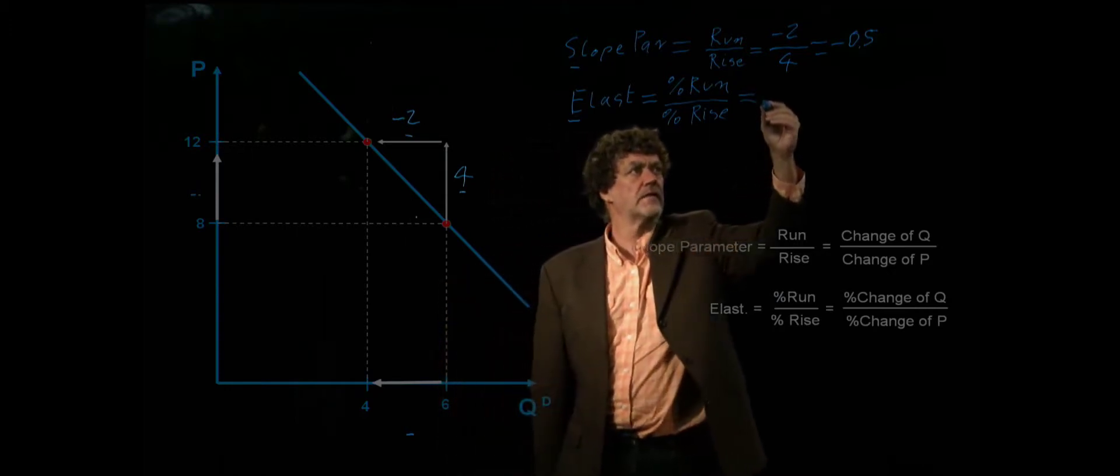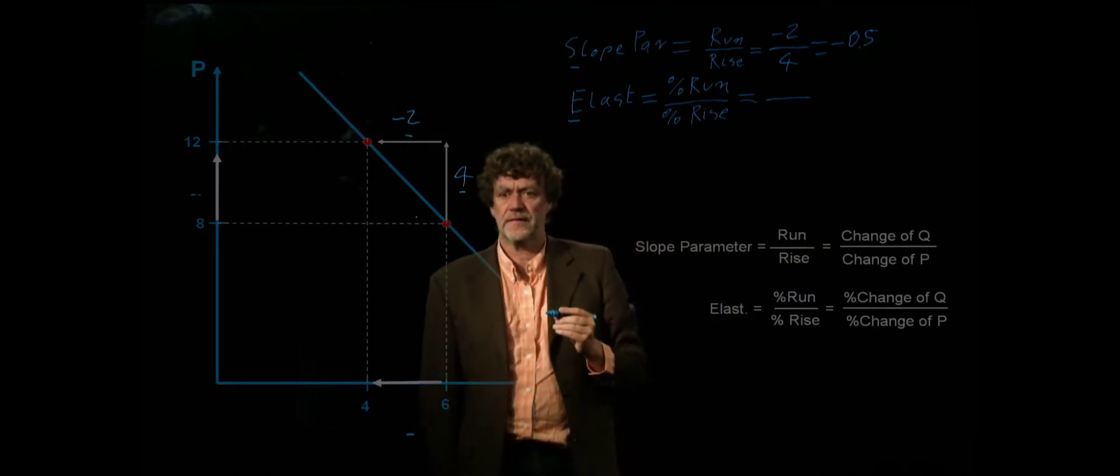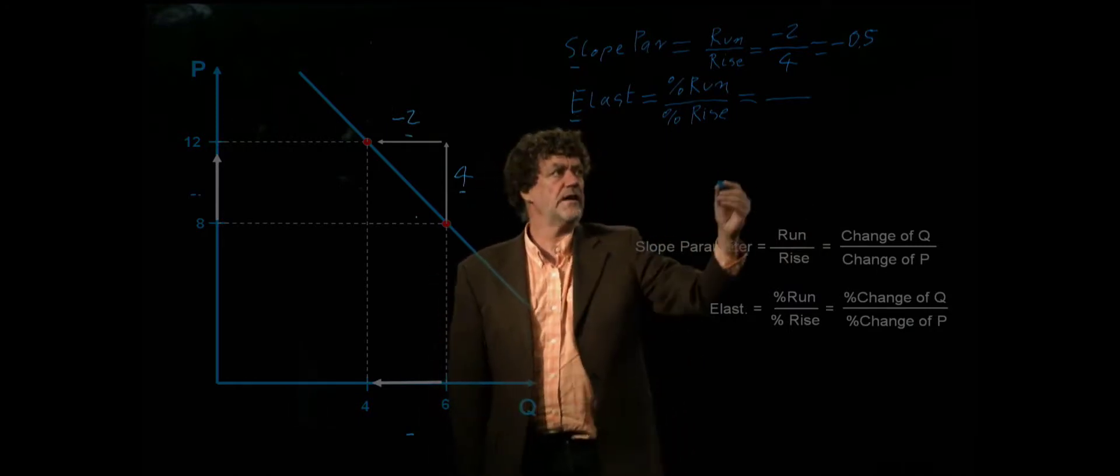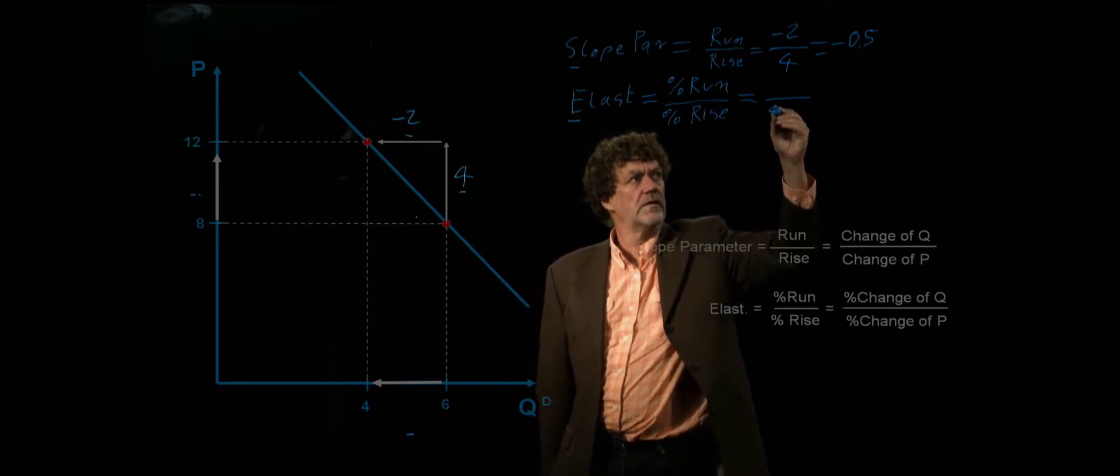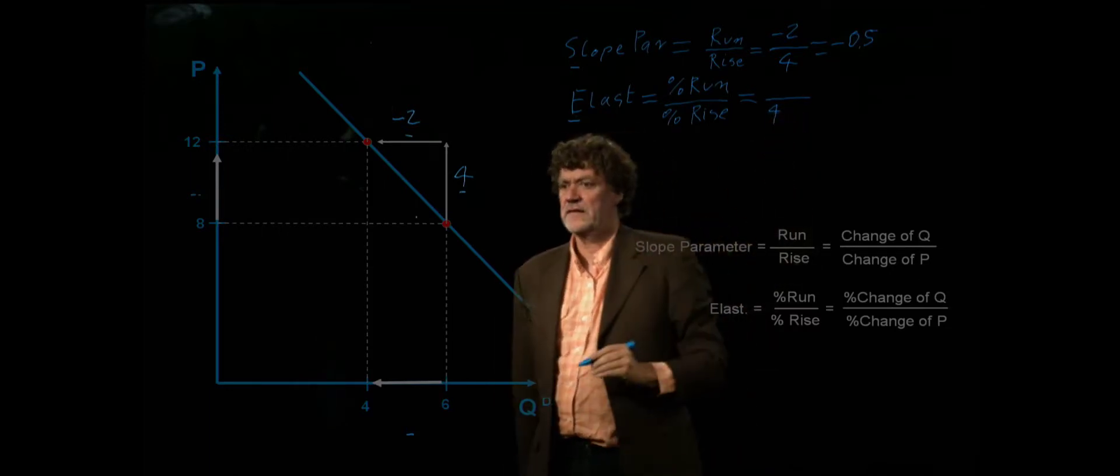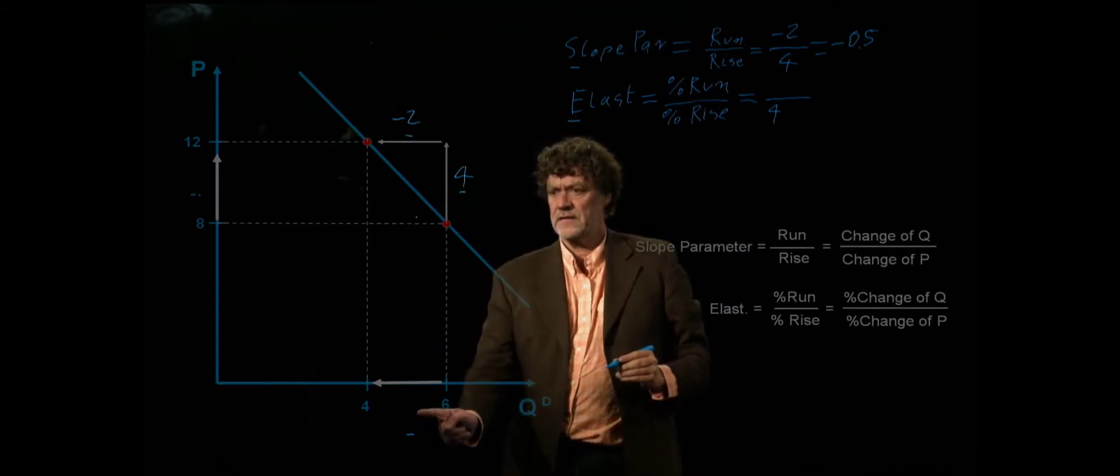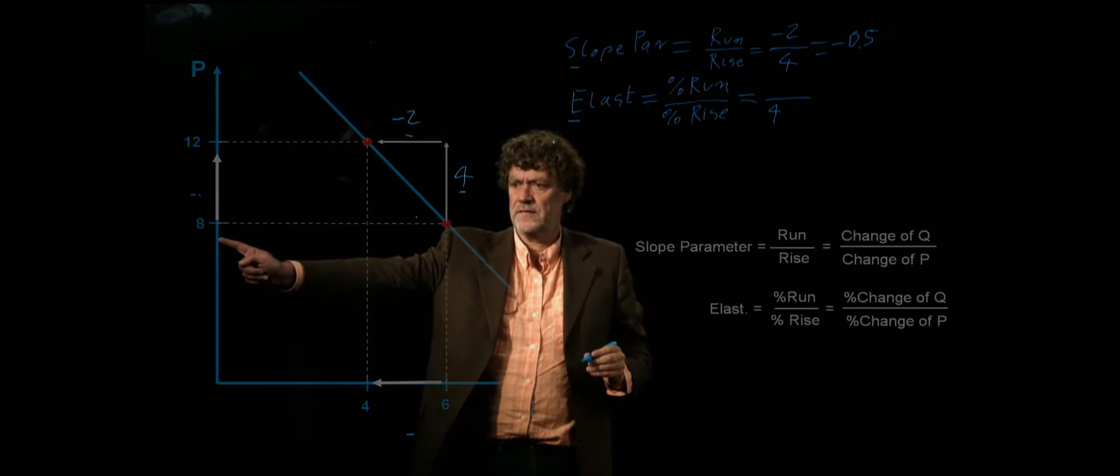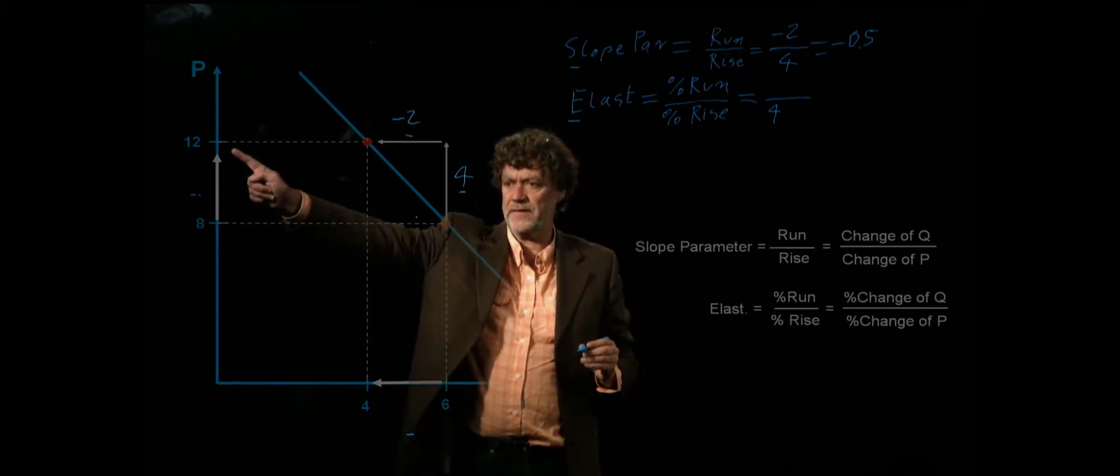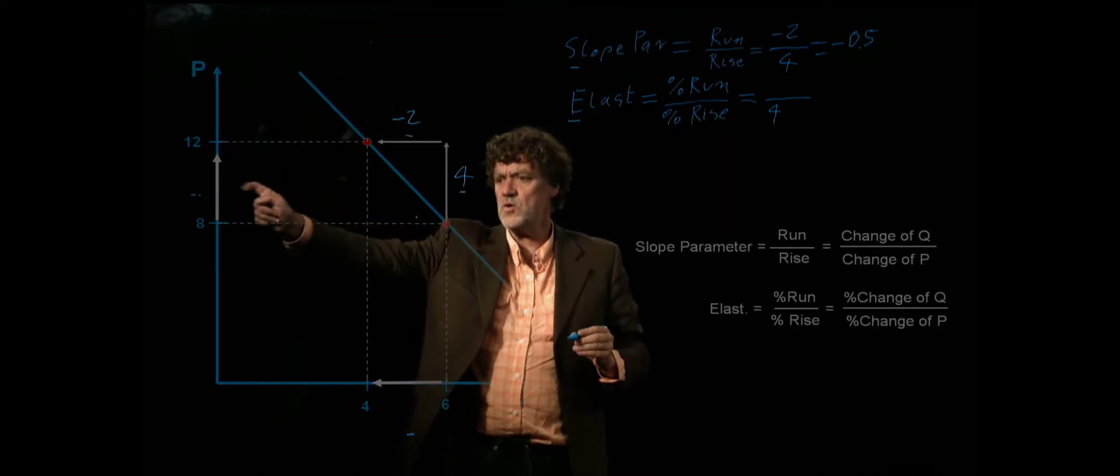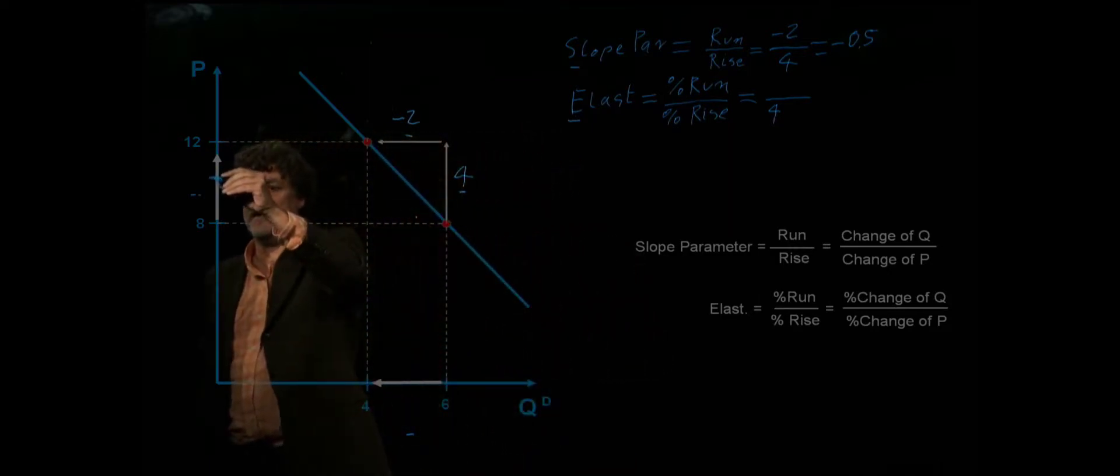What is the percentage change of price? Well we know already the absolute change was 4. So we just have to divide by the level. The problem is should we divide by 8 or should we divide by 12 by this point? What do we do? We choose a compromise and take the midpoint.